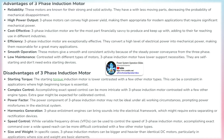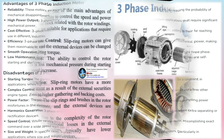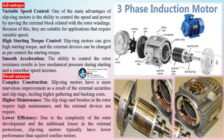One of the main advantages of slip ring motors is the ability to control speed and power by adjusting the external resistance connected to the rotor windings, making them suitable for applications that require variable speed. Slip ring motors can also provide high starting torque, and the external resistance can be adjusted to control the starting torque. The ability to control the rotor resistance results in less mechanical stress during starting and a smoother acceleration.